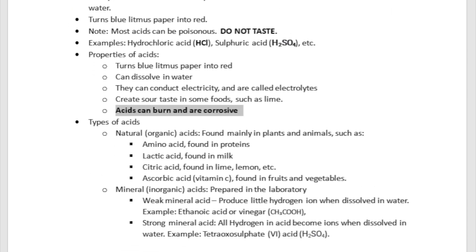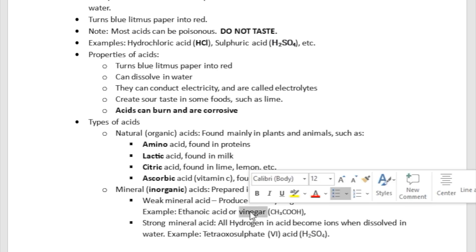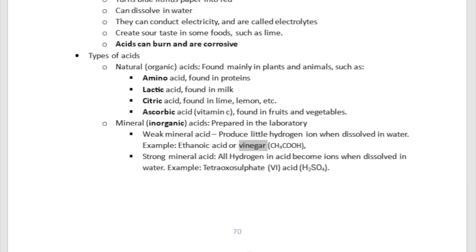There are two major types of acids. There are natural acids, like those found in foods — amino acids found in proteins, lactic acid found in milk, citric acid found in lemon, and ascorbic acid found in fruits and vegetables. Then there are mineral acids, which are inorganic acids, like weak mineral acids such as ethanoic acid or vinegar, and strong acids like tetraoxosulfate-6 acid, which we don't want to play with.